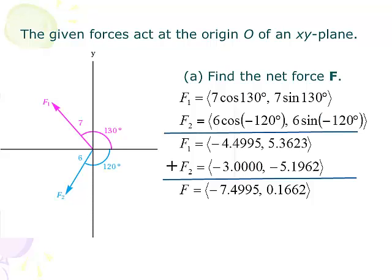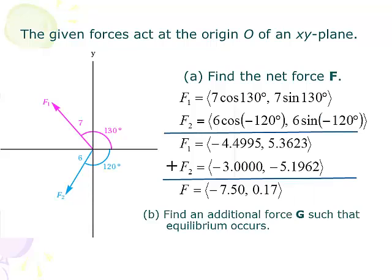F2 is (−3, −5.2) exactly. Adding up the x's and the y's, the net force is approximately (−7.50, 0.17). After finding net force F, the question is: find an additional force G such that equilibrium occurs — meaning F plus G equals the zero vector 0, 0. Hopefully you won't use your calculator for this part. We just add the opposite: since F is (−7.5, 0.17), G is (7.5, −0.17). Those last two examples are essentially the same thing shown in two different formats.